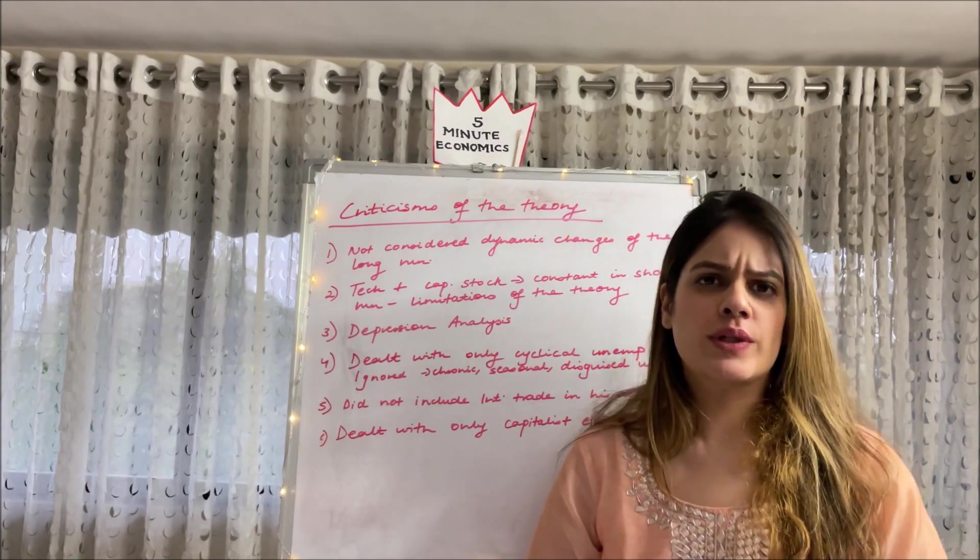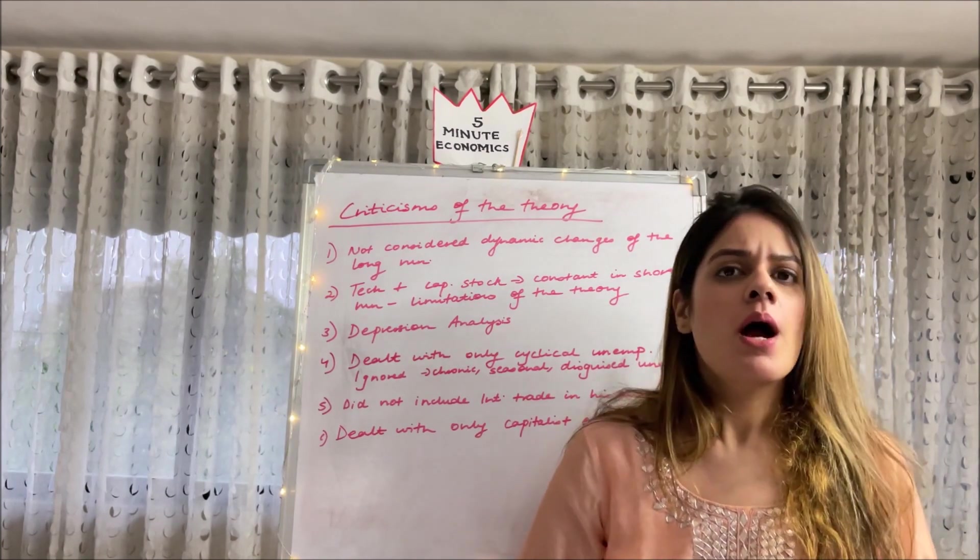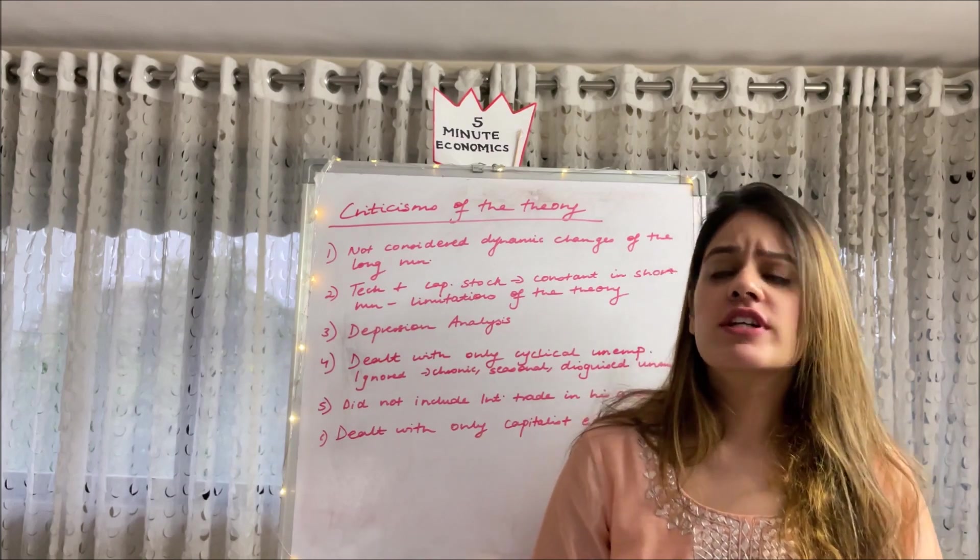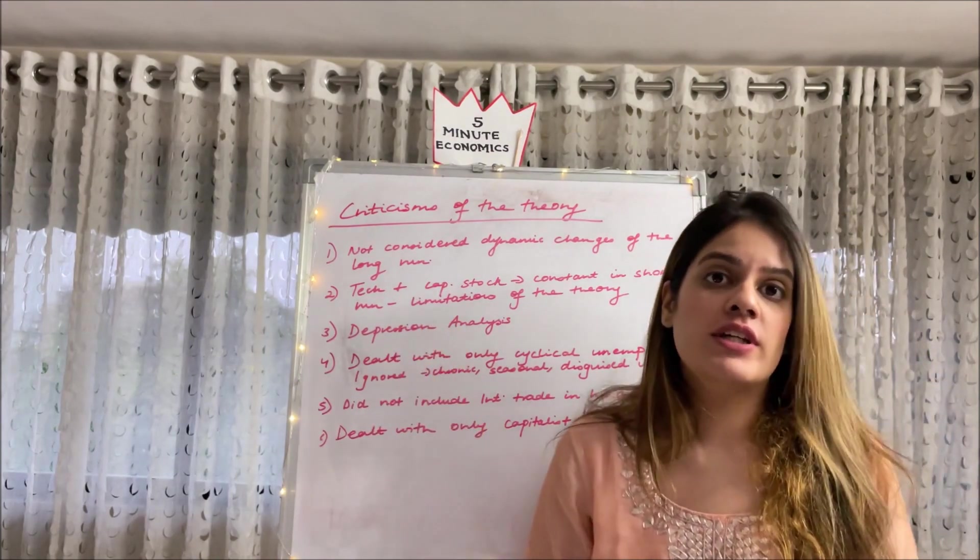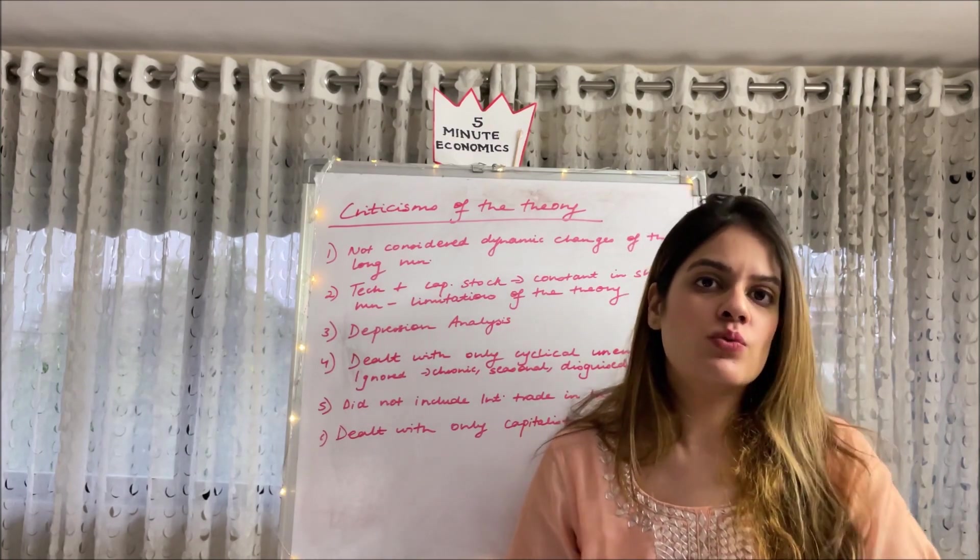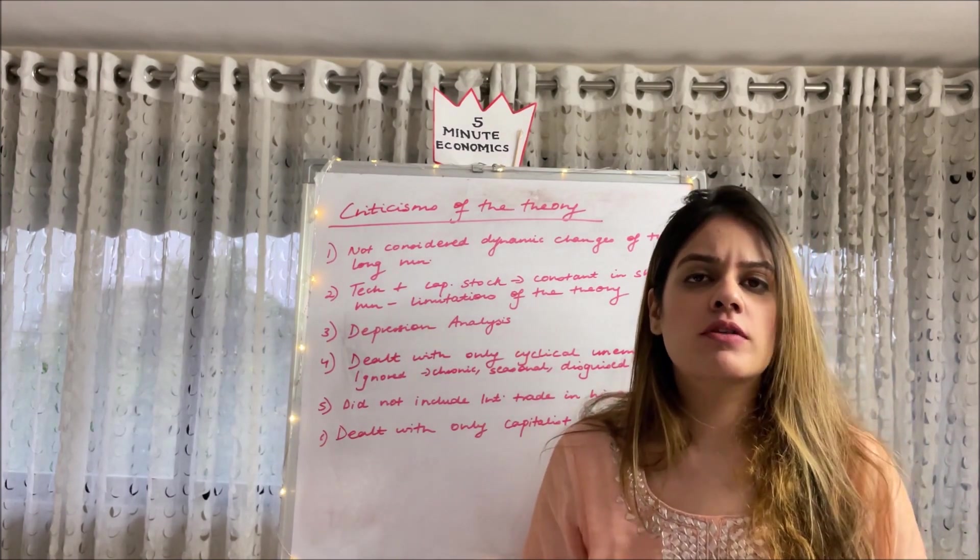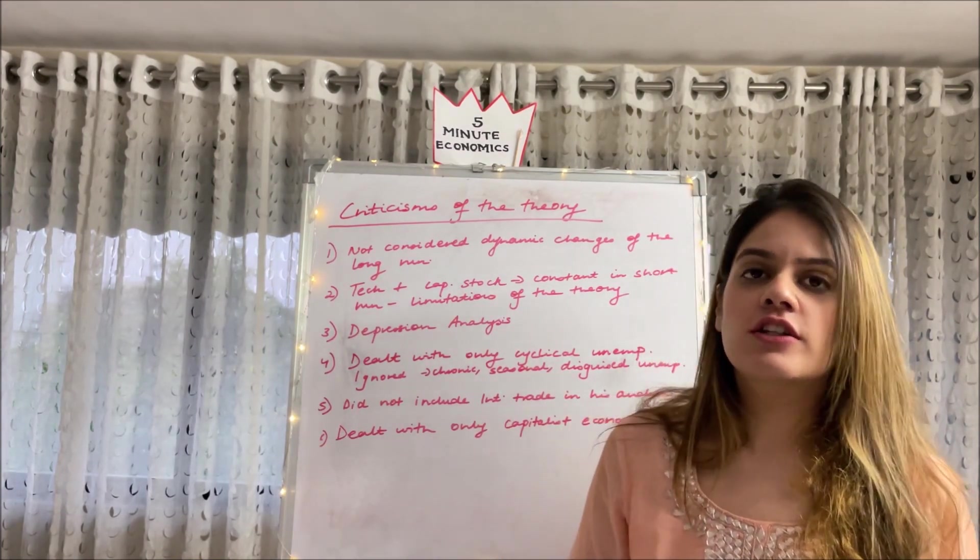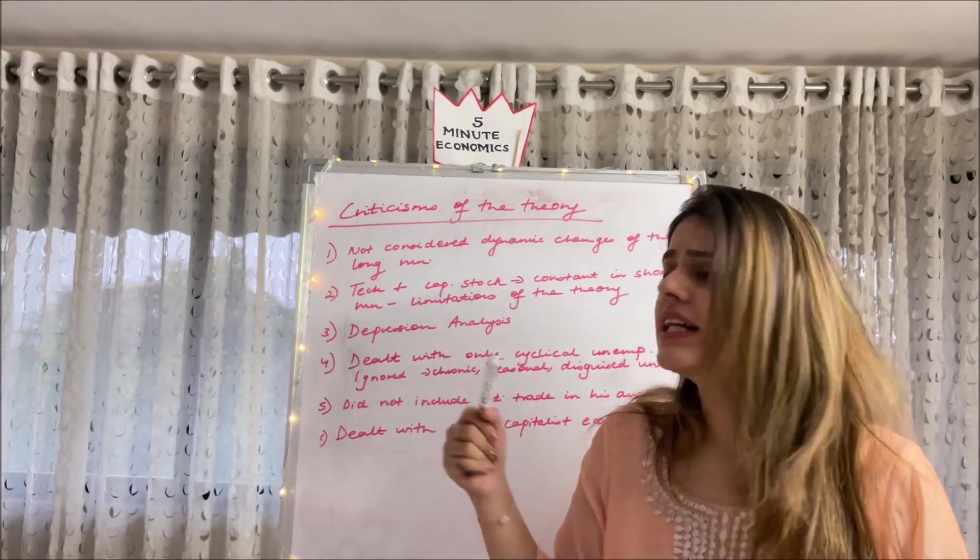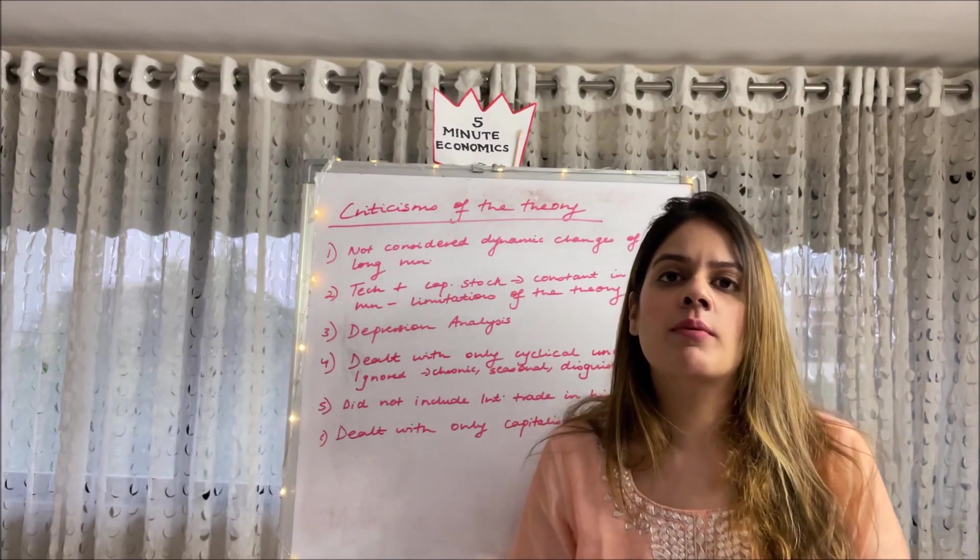So lastly, coming to the criticisms of the Keynesian theory. There are people who had criticized the Keynesian theory as well. The number one criticism was that because Keynes always dealt in short run, he ignored the dynamic changes of the long run, and that's where people criticized his theory. Secondly, because in the short run technology and capital stock were considered to be constant, they cannot change in the short run, right? So it brought about a limitation to his particular theory.